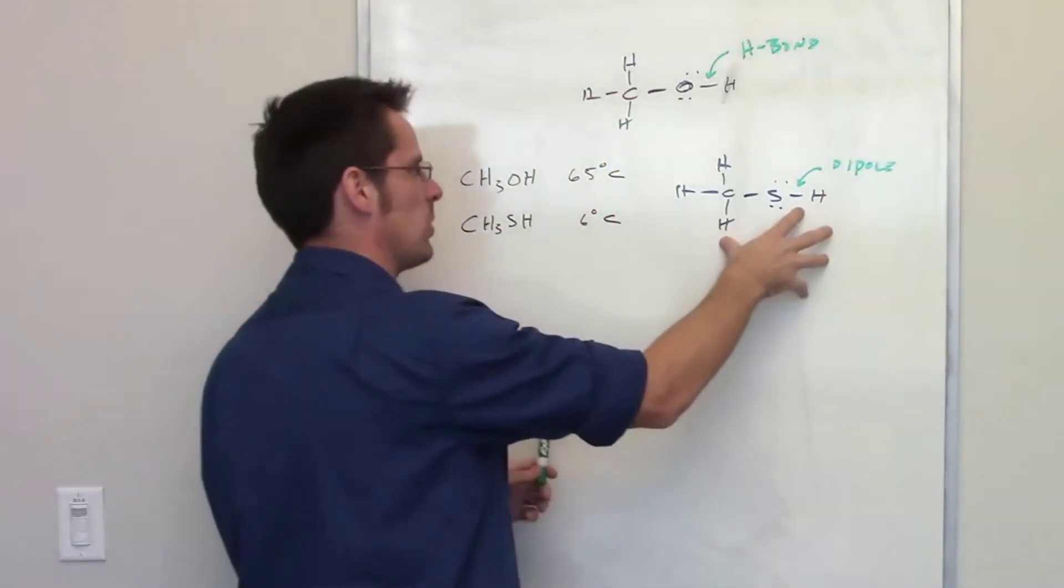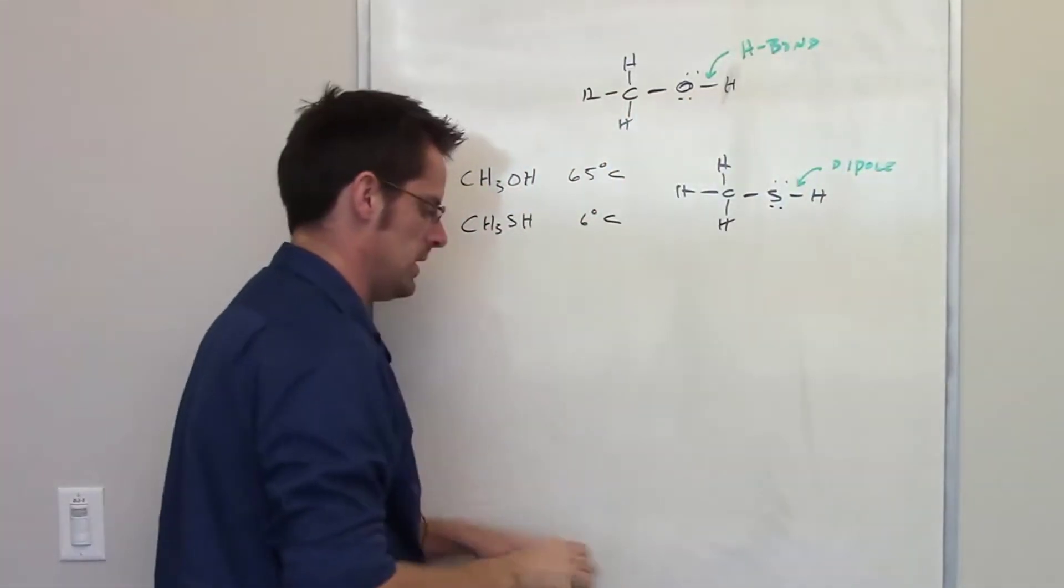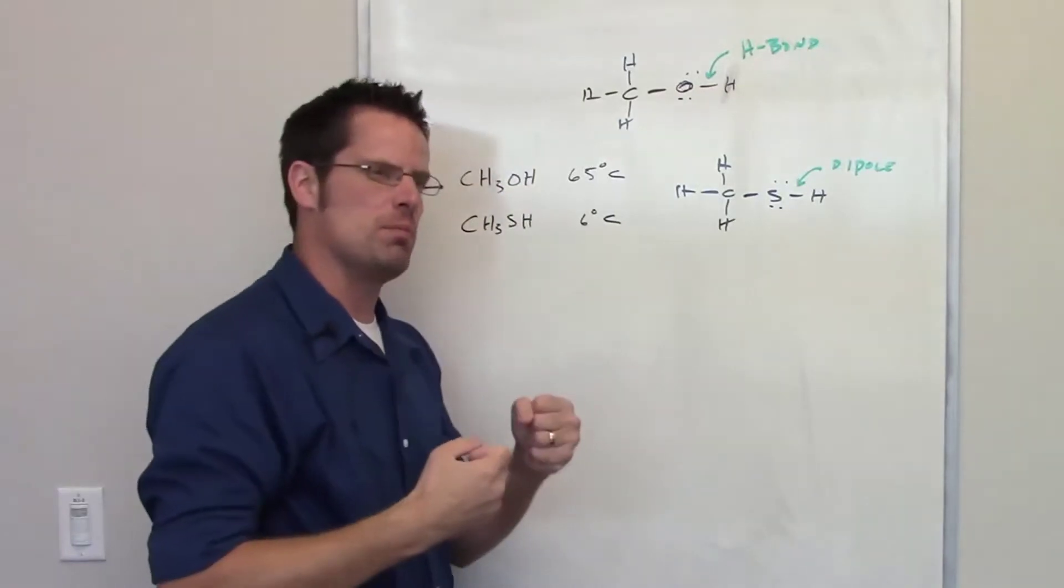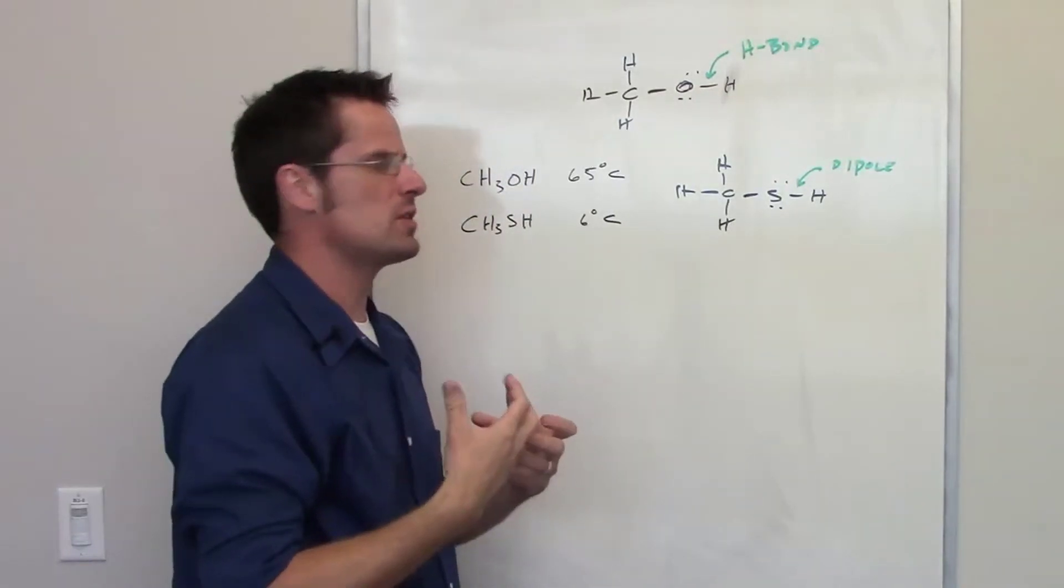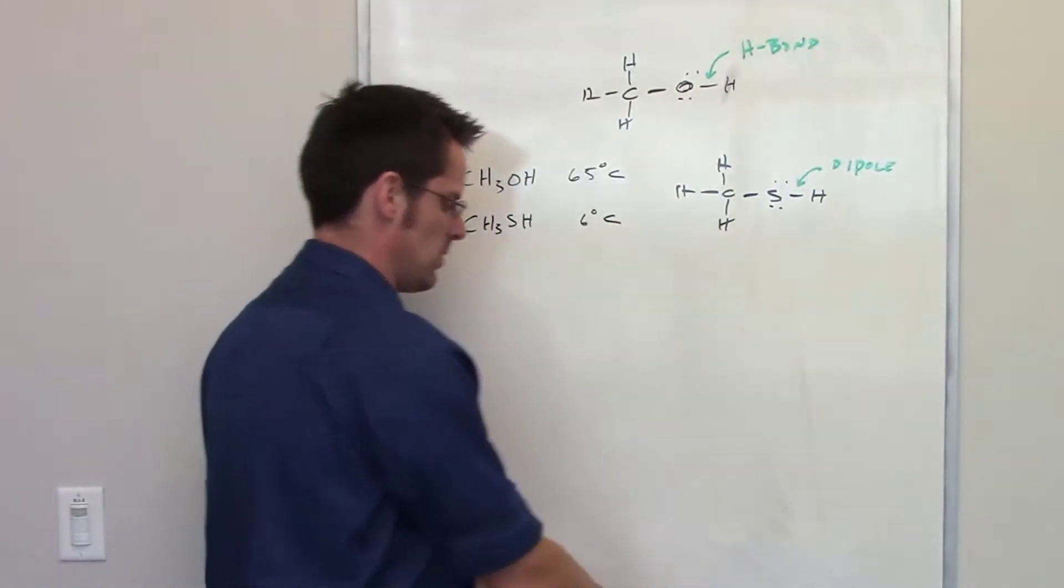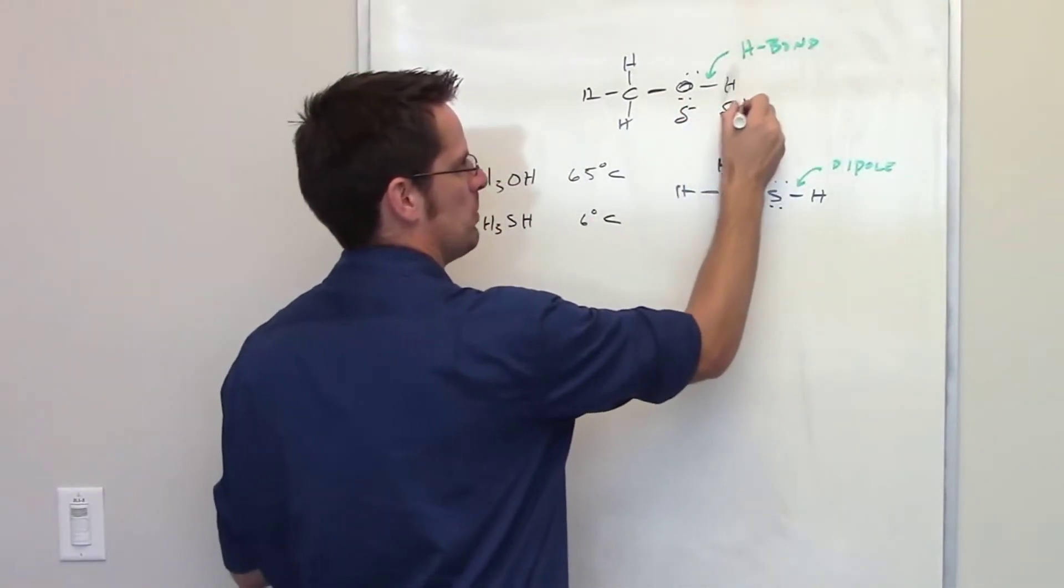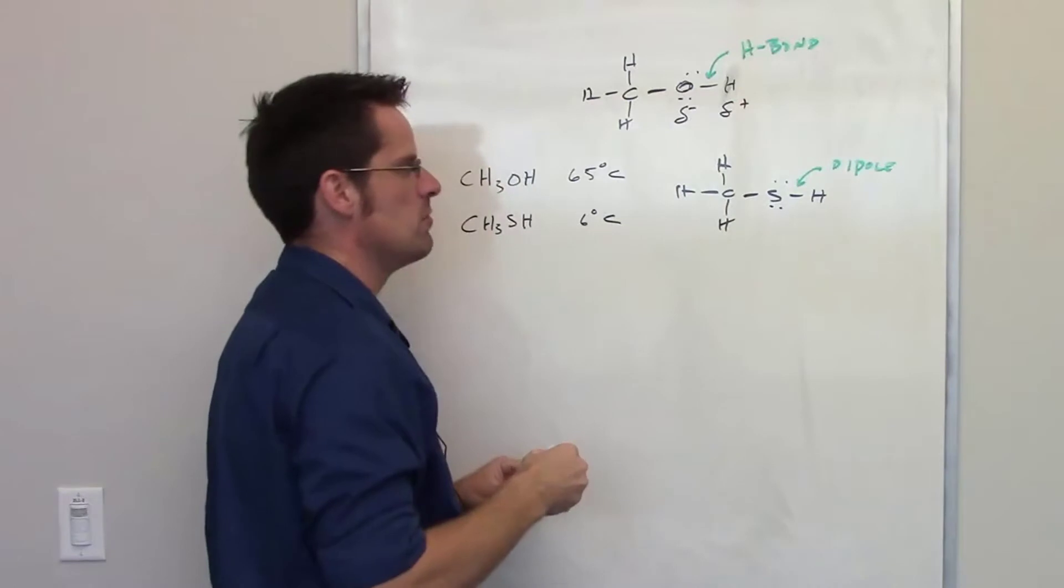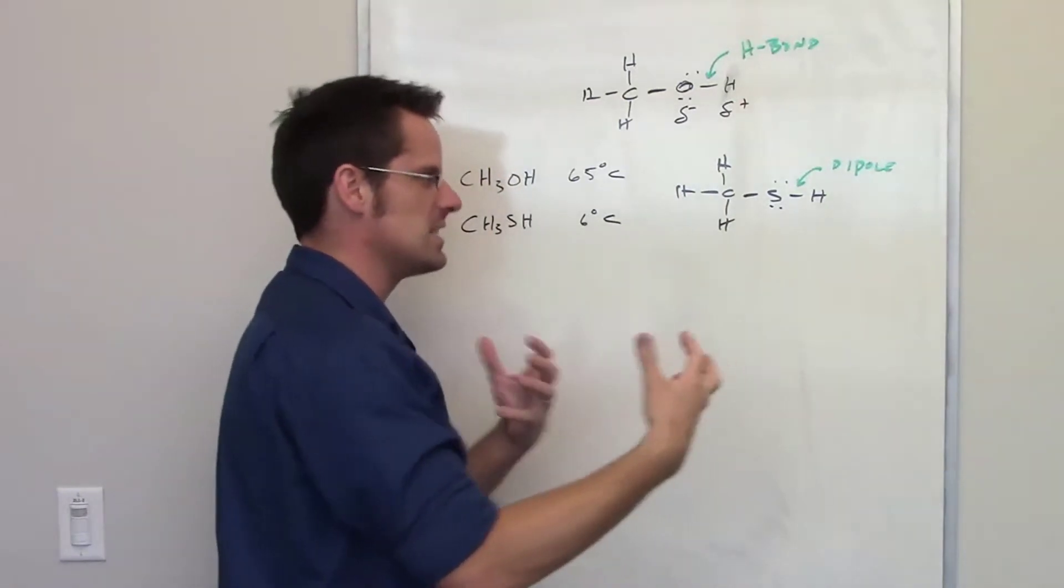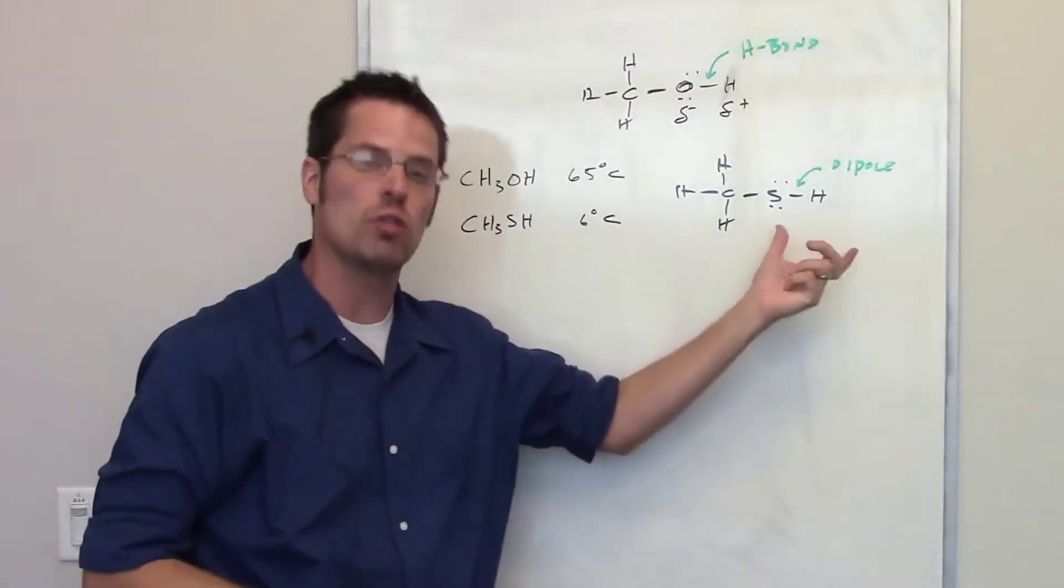We call this a dipole-dipole force, whereas this is a hydrogen bond. There's such a much greater difference in electronegativity between these two atoms that there will be a very strong partial negative charge on the oxygen and a partial positive charge on the hydrogen, very much more dramatic in difference than the difference between the sulfur and hydrogen.